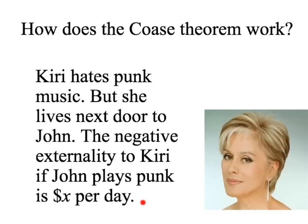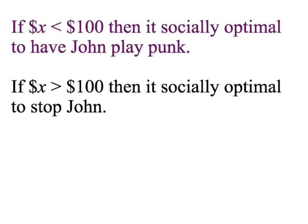We're going to fill in X and see how results change as that value changes. If X is less than $100 — so the value to John of playing punk, $100, is greater than the negative externality — then the socially optimal outcome is to have John play punk. There's a net gain of 100 minus X. Of course, if X is greater than $100, so Kiri suffers more than $100 worth of loss, it's socially optimal to stop John from playing the music. He gets $100 benefit, but Kiri loses more than $100 — there's a net loss to society.